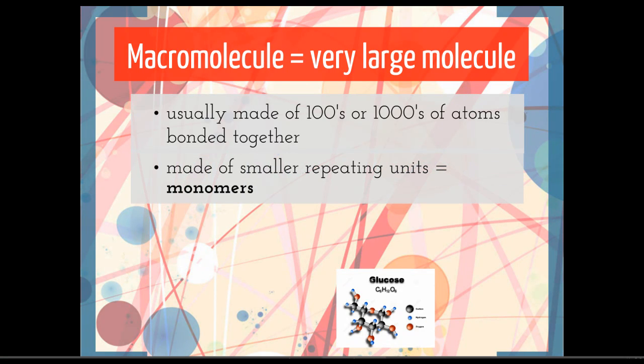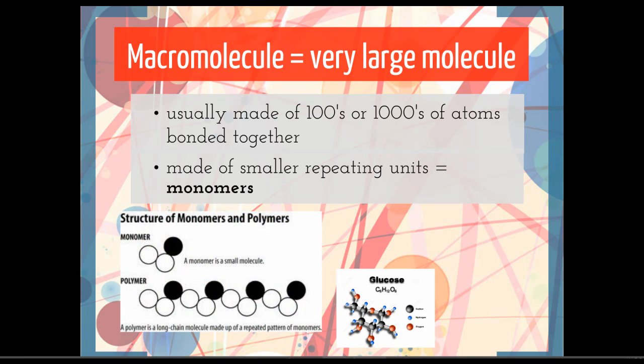While that sounds like a huge molecule that would be difficult to understand, it's actually made of smaller repeating units that we call monomers. Remember in Latin mono means one and mer means unit. So here's a simple example of the structure of a monomer and a polymer.